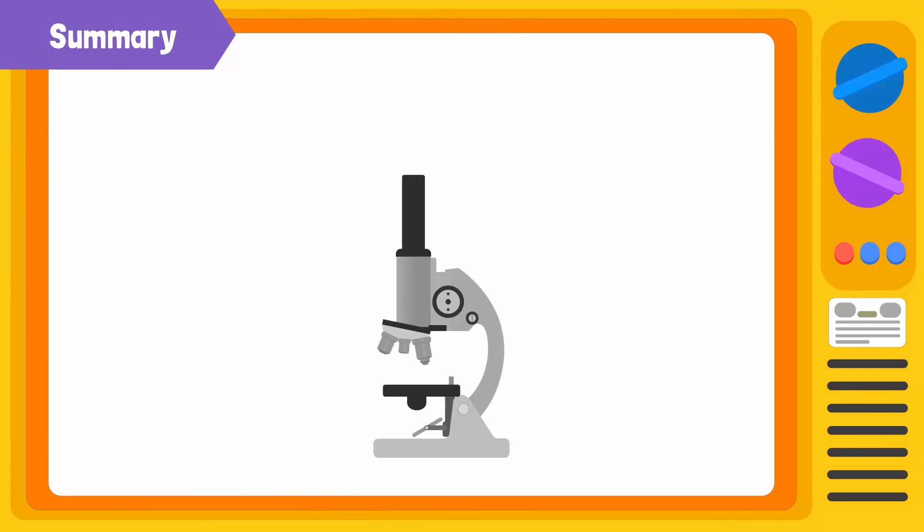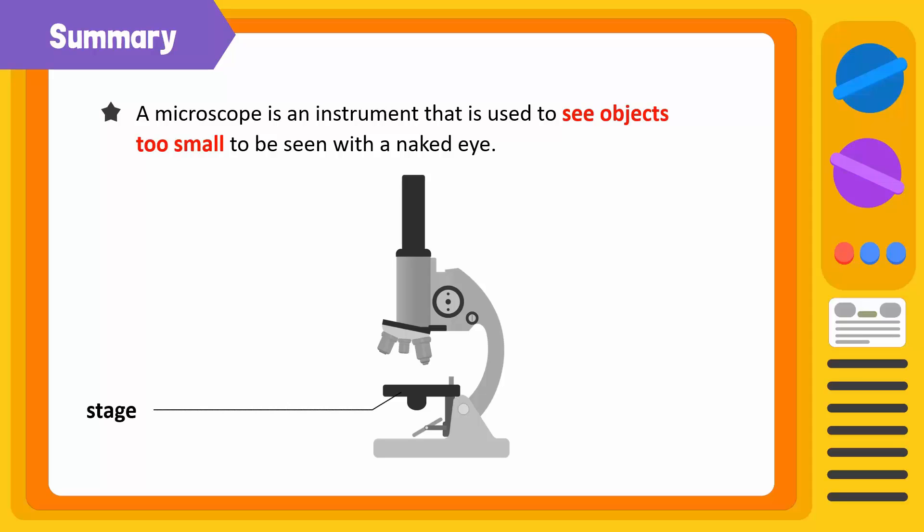Let's summarize what we have learned in this video. A microscope is an instrument that is used to see objects that are too small to be seen with the naked eye. In order to work with the microscope, we mount the slide containing the specimen onto the stage and secure it using the clips. The eyepiece can magnify a specimen up to 10 times, and the objective lens can magnify it another 100 times.